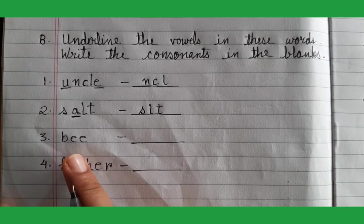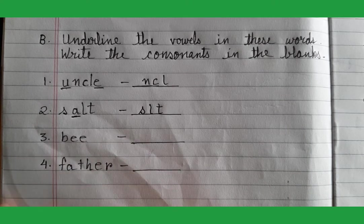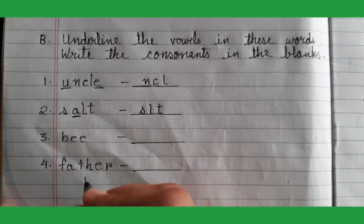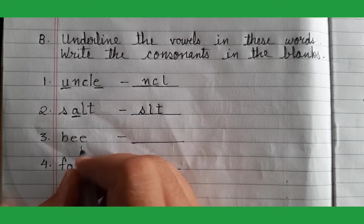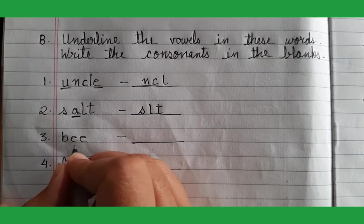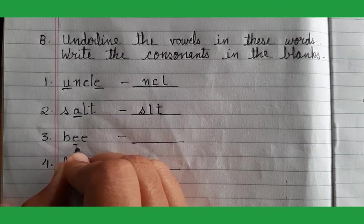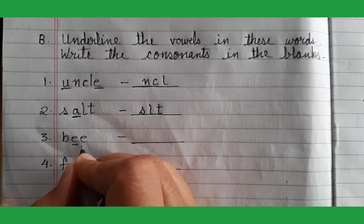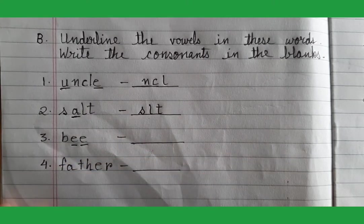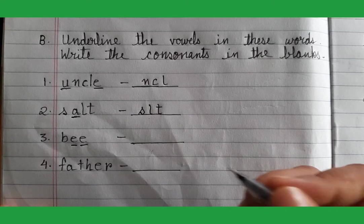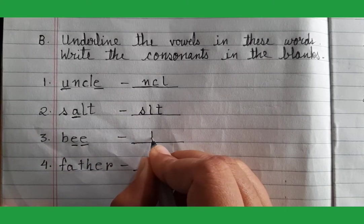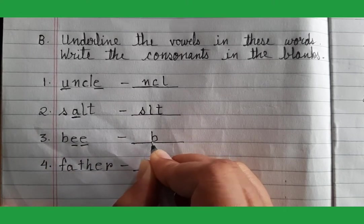Now next word is 'bee.' In the word 'bee,' which letters are vowels? E and E — both are vowels. And the letter B is a consonant.